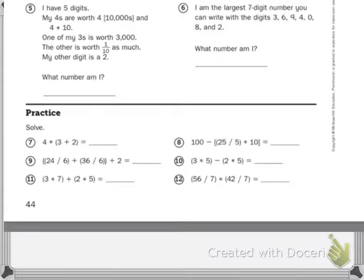Number five says, I have five digits. My fours are worth four. And that bracket means like a parenthesis, so you're multiplying. My fours are worth 10,000 and four times ten. One of my threes is worth 3,000. The other is worth one-tenth as much.